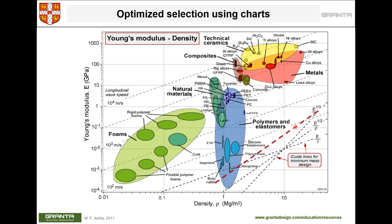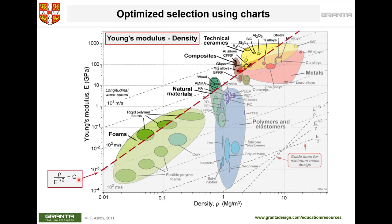You can move this line up and down depending on your constraint value — represented by C. Materials above the line satisfy your design requirement. These material property charts allow us to compare materials comprehensively, and including such plots in a report or presentation demonstrates that you have thoroughly evaluated the material space and narrowed it down to the optimal choice.